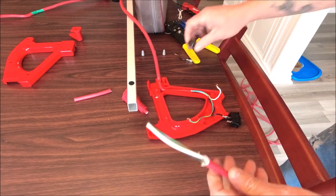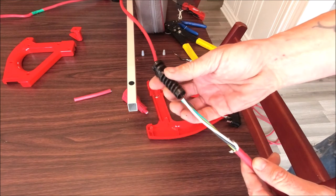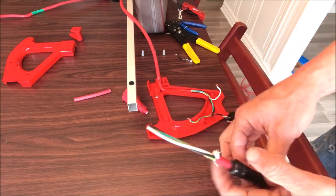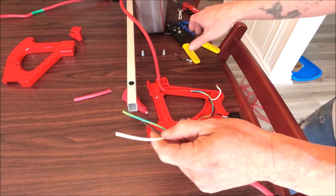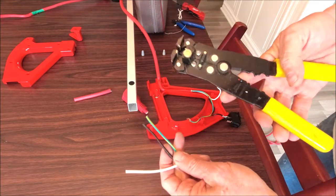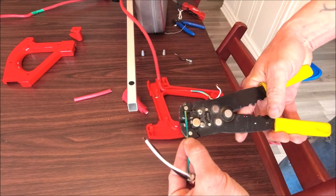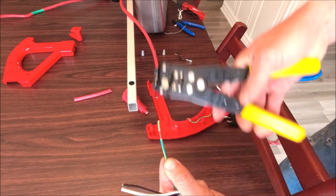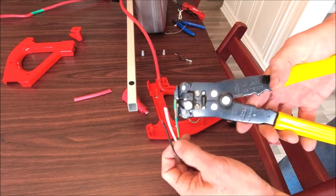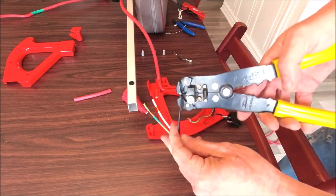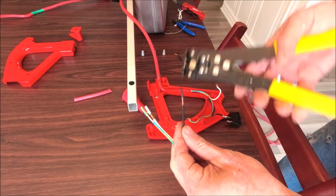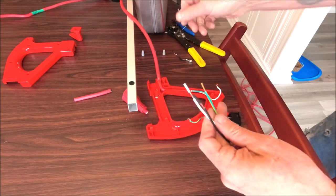We're going to go ahead and slip our wire loom over top of this right now and just put it on there because if we don't, we'll forget about it. We're going to grab our wire strippers, so we're just going to put a little bit in here about like so, give that a pull, and get these wires stripped down so that we can connect them.